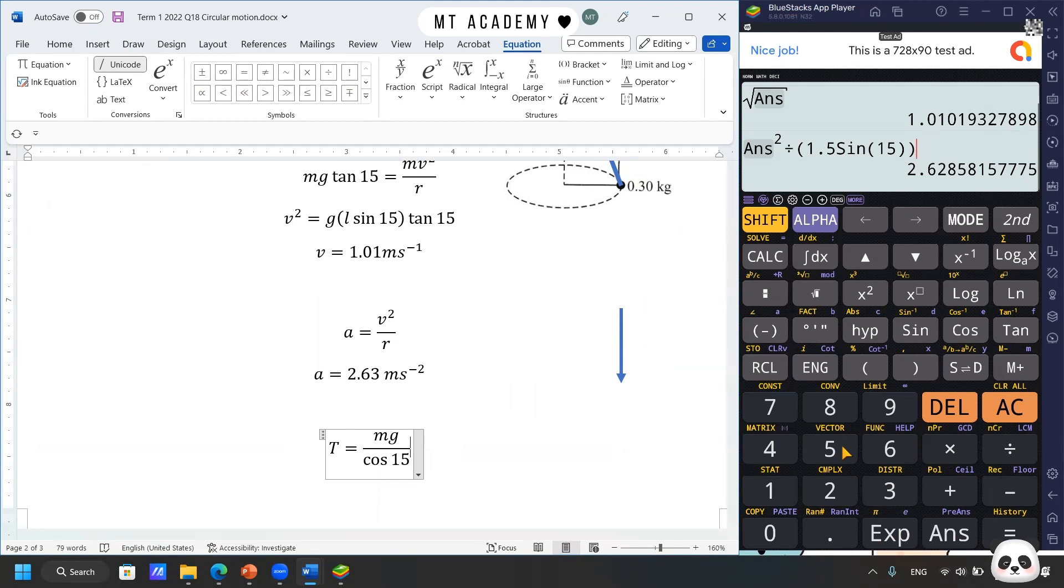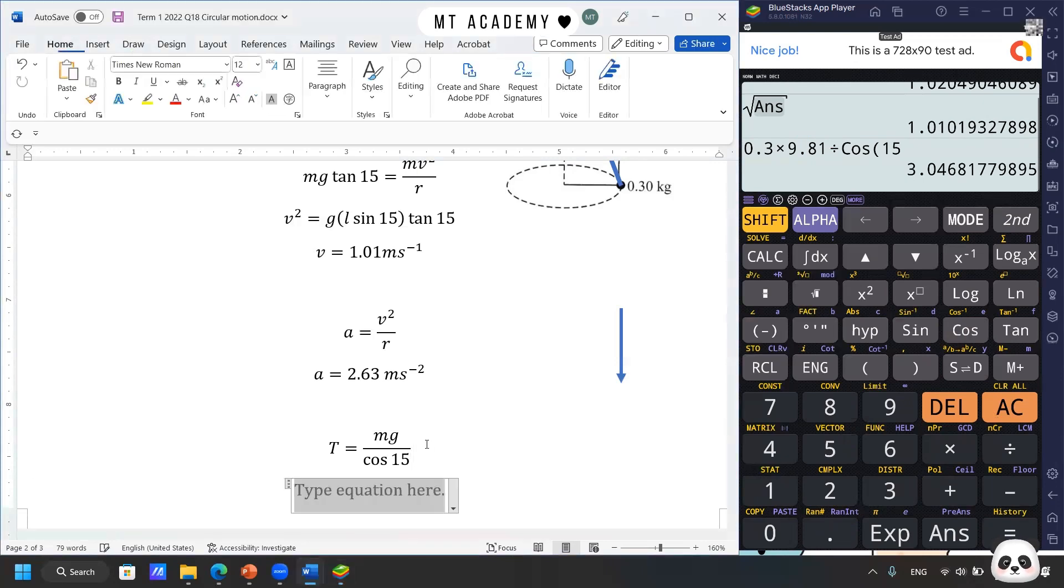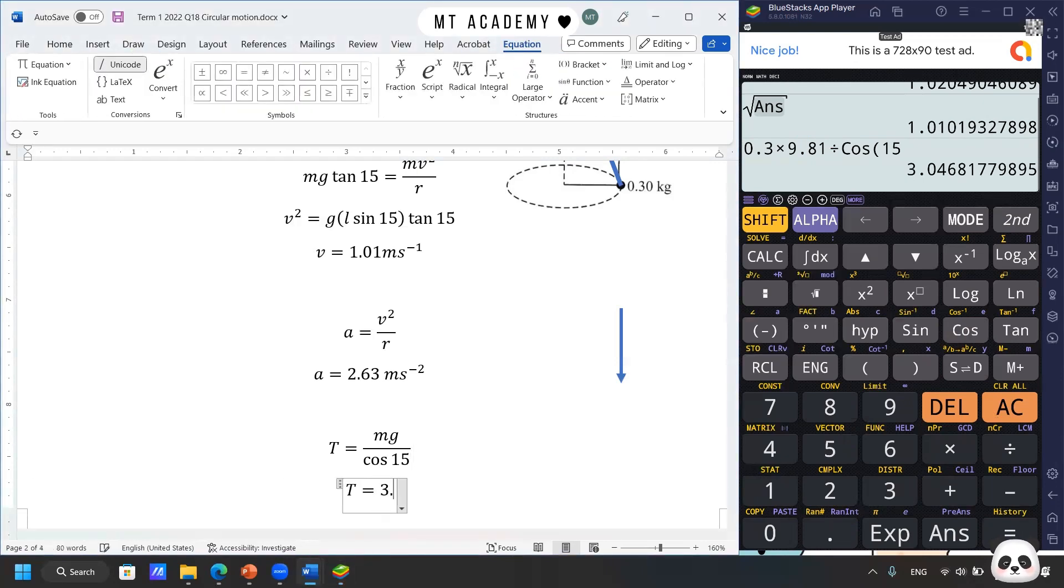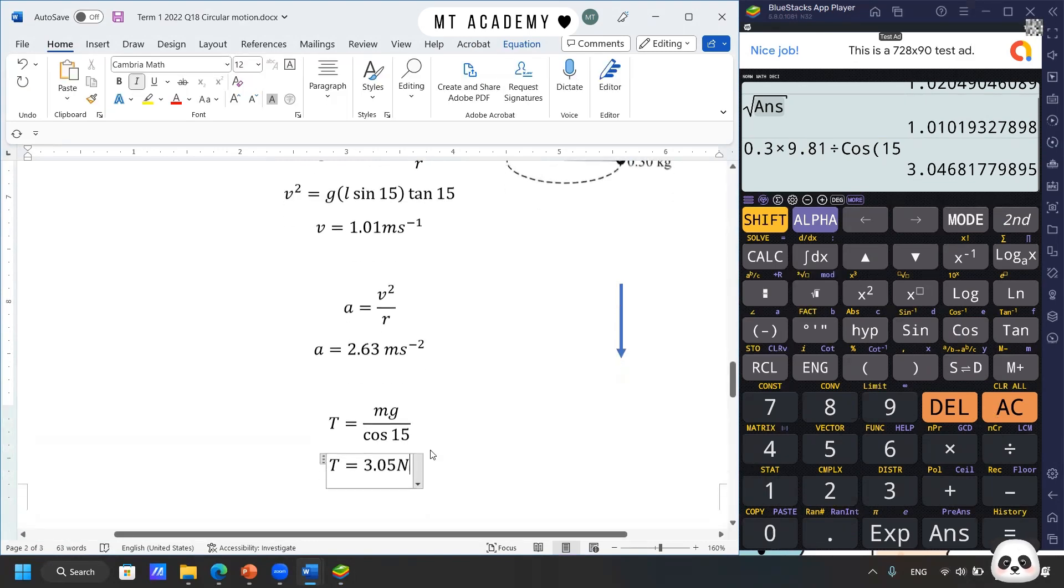So we have the mass is 0.3, multiplied by 9.81, divided by cos 15°. So the tension would be equal to 3.04, 3.05 Newtons. So I guess there should be not much problem here.